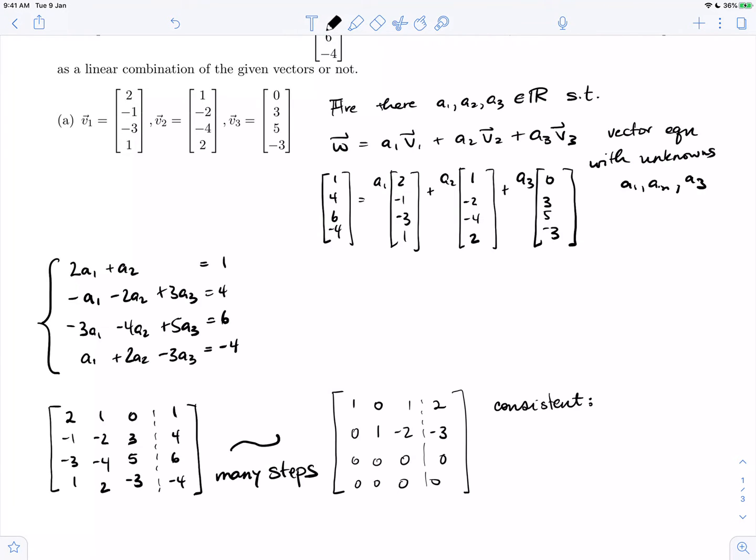We can see right away that our system is consistent. That means there is a solution. So I can answer the question: yes, w may be expressed as a linear combination. There is a solution to this equation. There are constants a1, a2, and a3.